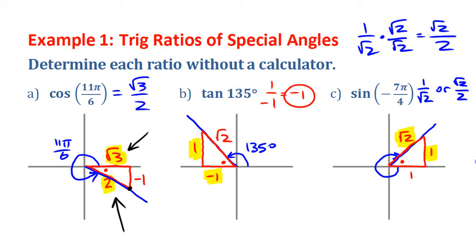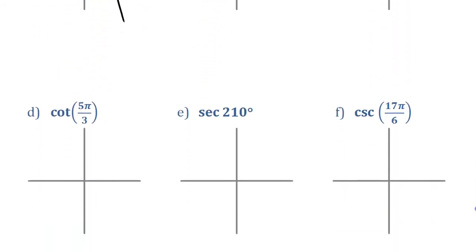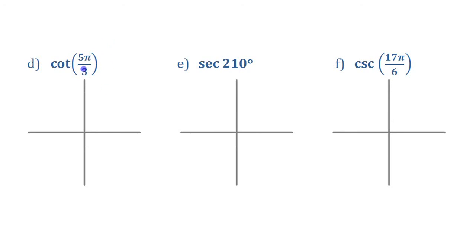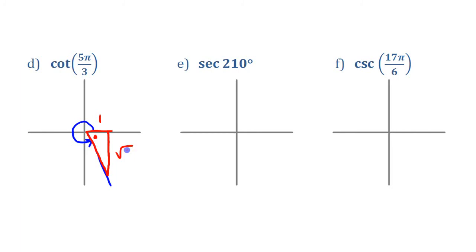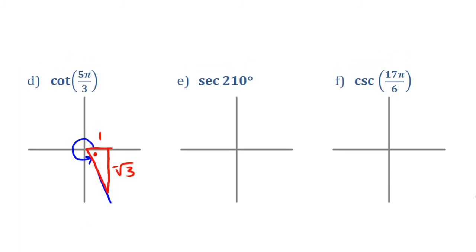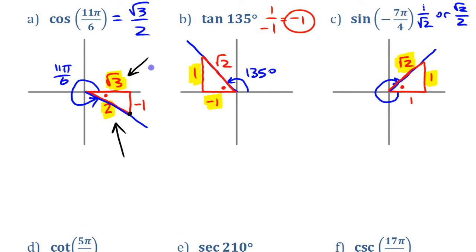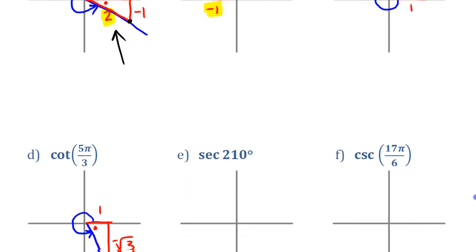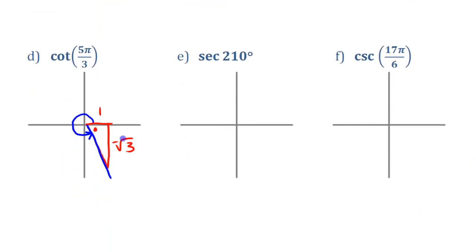You can use this exact same approach for reciprocal trig ratios — no different. Here are three reciprocal ratios to find. First, cotangent of 5π/3. 5π/3 is in quadrant 4 and related to π/3, which is 60 degrees. For this one, I draw the reference triangle the tall way, with the 1 horizontal and the √3 going vertically — different from before where the √3 was sideways. That's important so you don't get mixed up.